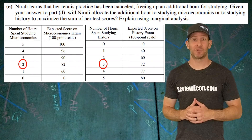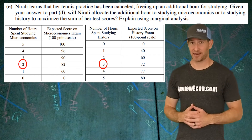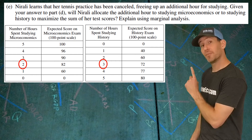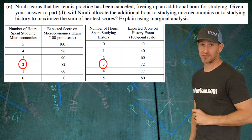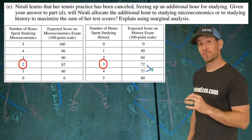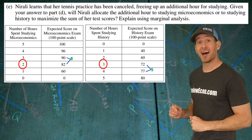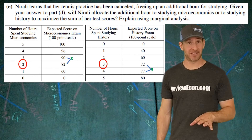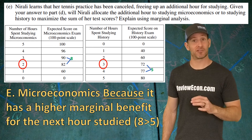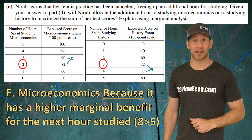For part E, we find out that Nirali has an additional hour that she could devote to either studying history or microeconomics. To find out where she should put that hour, take a look at the marginal benefit for each subject. If she studies history, she will have a marginal benefit of five more points. When it comes to microeconomics, there's a marginal benefit of eight. To get this point, just say microeconomics because there is a larger marginal benefit — eight is greater than five.